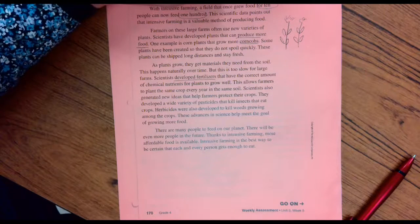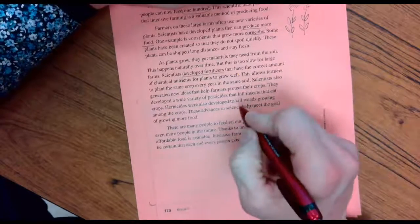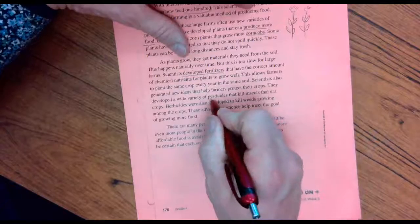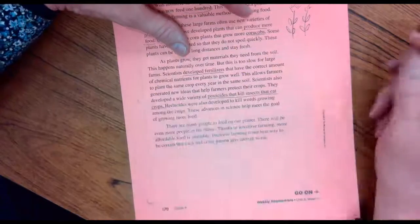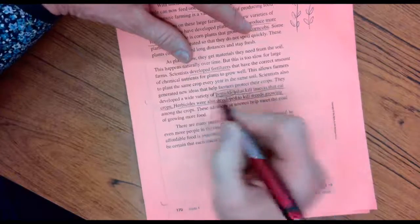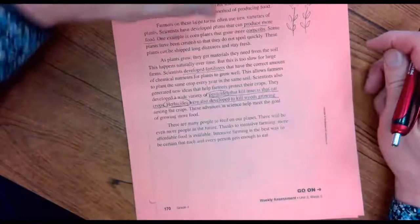This allows farmers to plant the same crop every year in the same soil. Scientists also generate new ideas to help farmers protect their crops. They develop a wide variety of pesticides that kill the insects that eat the crops. Herbicides are developed to kill the weeds.